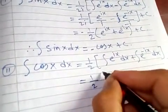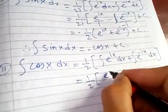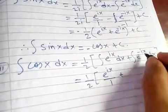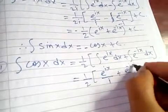Which is 1/2 times e^(ix)/i plus e^(-ix)/(-i).